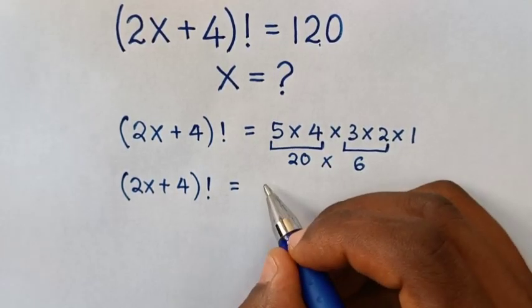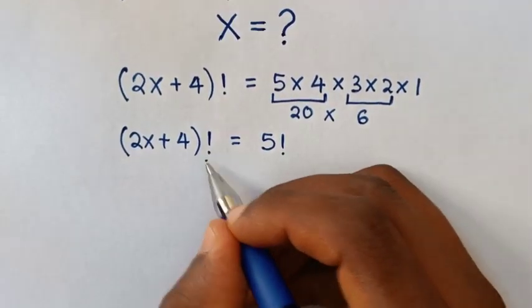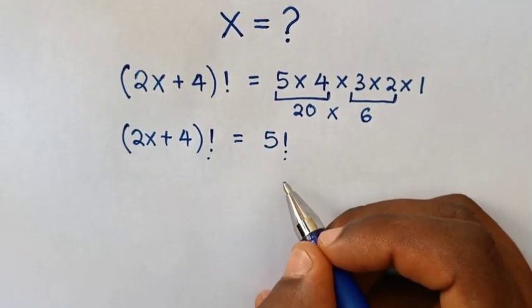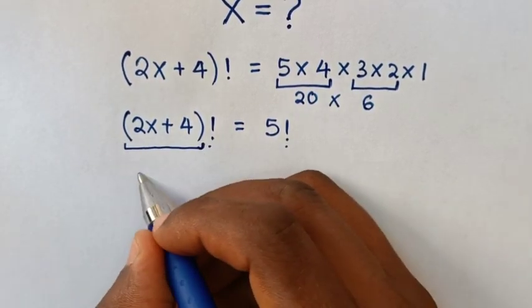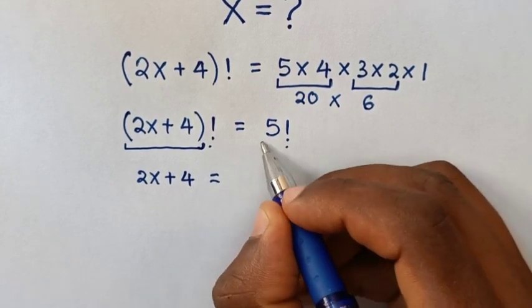Now this factorial will cancel each other. Therefore, our equation will be 2x + 4 is equal to 5.